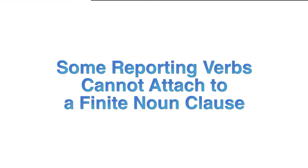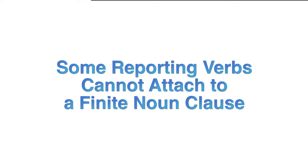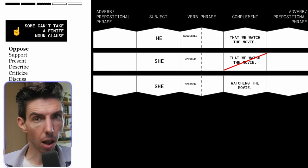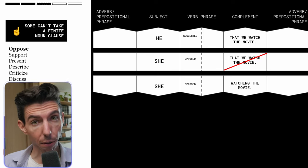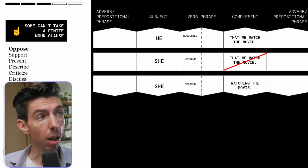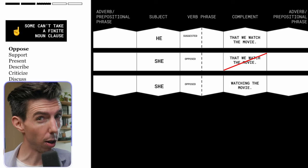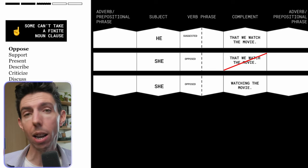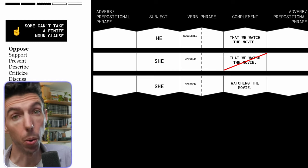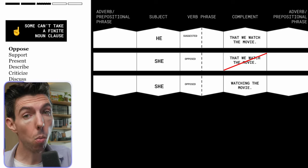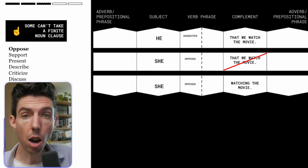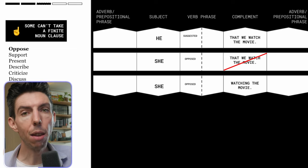A very common mistake is that some reporting verbs cannot take a finite noun clause. The finite noun clause — 'that' plus a finite clause — is the most common complement for reporting verbs, but please take a look at this list of verbs that cannot take one. For example, 'oppose' — you cannot say 'oppose that we watched the movie.' You can oppose watching the movie using the non-finite -ing clause, but you cannot use a finite noun clause with 'oppose.'